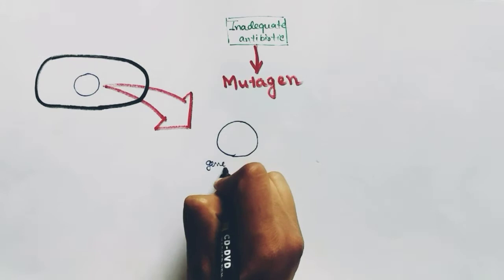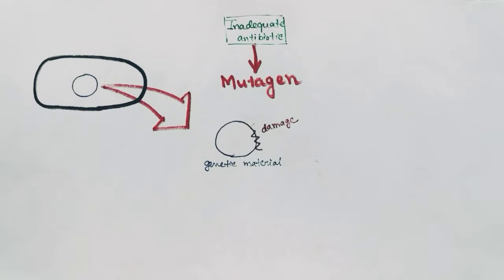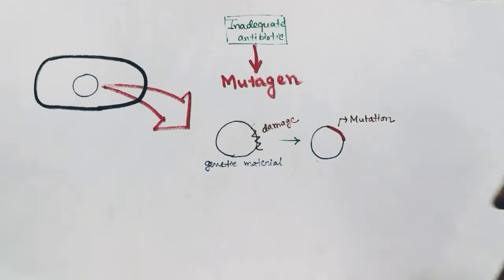How does this inadequate amount of antibiotic become a mutagen? This is the genetic material of the bacteria. The antibiotic can damage the genetic material, but if it is not in adequate amount, the bacteria get a chance to repair their genetic material. And when they repair it, it is not always the same as before — it can bring mutation, or changes, in the genetic material of the bacteria.